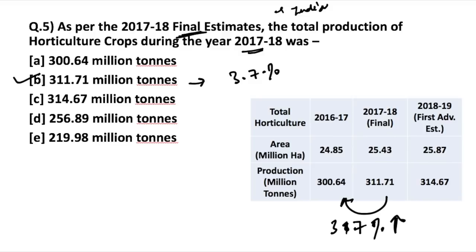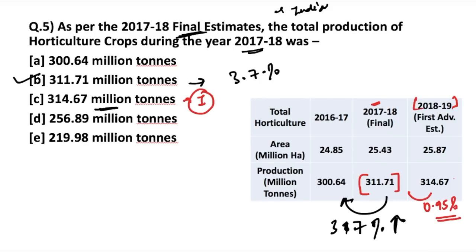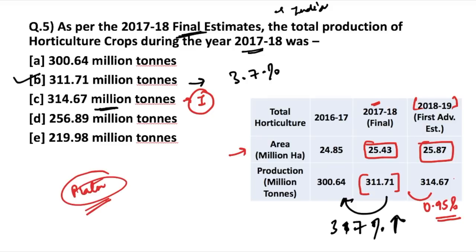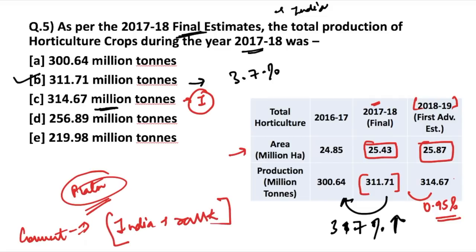Along with the 2017-18 final estimates, the first advance estimates of 2018-19 have also been released. The total horticulture production is estimated to be 314.67 million tons, approximately 0.95% higher than 2017-18. In terms of area, it stands at 25.43 million hectares for 2017-18 and 25.87 million hectares as per the first advance estimates. Tell me in the comments: what is India's rank in terms of horticulture production?